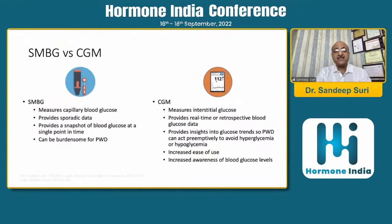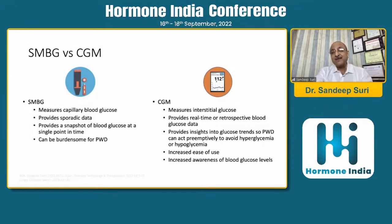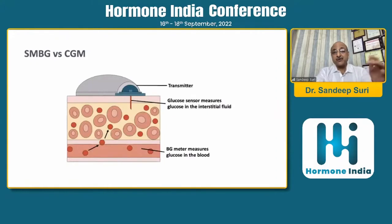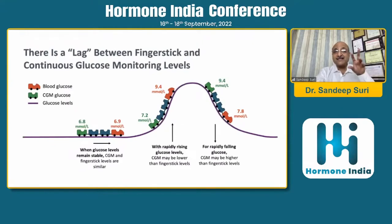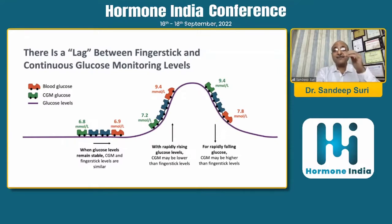What is the difference between SMBG and CGMS? SMBG - self-monitoring of blood glucose - measures capillary blood glucose and gives you a snapshot or sporadic data. Whereas CGMS provides continuous data every 5 or 15 minutes and measures interstitial glucose. There is a lag between finger-stick and CGMS levels. When glucose is stable, both are the same. But when glucose is rapidly rising, CGMS may be lower than finger-stick; when rapidly falling, CGMS may be higher, with a lag period of 10 to 15 minutes.